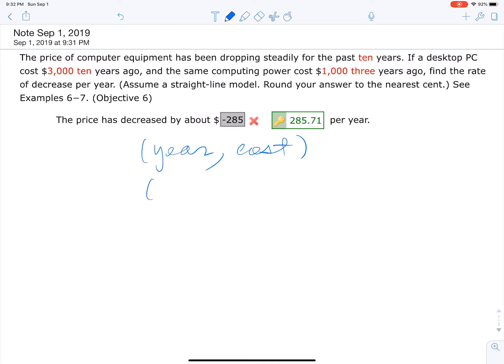So why don't we say something like (0, 3000). That was ten years ago, and then three years ago, so that was like seven years later, right? Then it was (7, 1000). Okay.